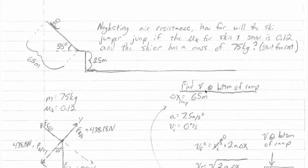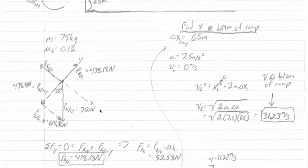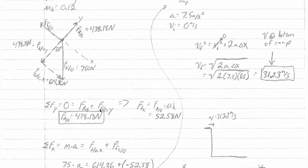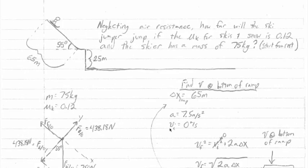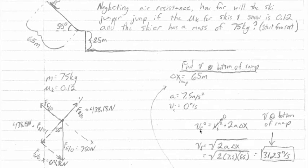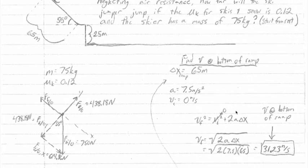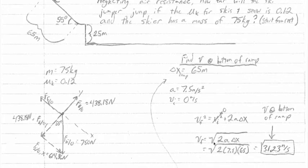In order to find the skier's velocity at the bottom of the ramp, we take those things that we know: the displacement along the ramp which is 65 meters, the acceleration which we did all this force analysis to find, and we know the skier's initial velocity is 0 meters per second. Using the equation v final squared equals v initial squared plus 2a delta x, we know initial velocity is 0 so we can cancel out that term and solve for v final to get the square root of 2a delta x.